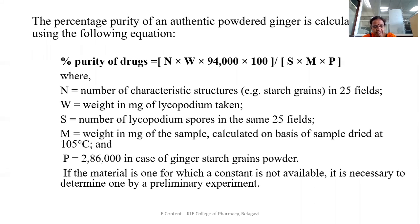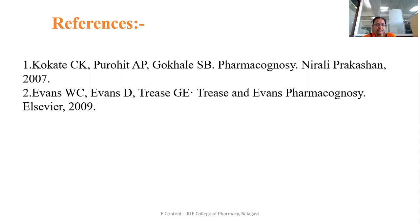If the material is one for which a constant is not available, it is necessary to determine one by a preliminary experiment — for example, using ginger starch grain powder. By this approach, you can apply the lycopodium spore method to calculate quantitative results.